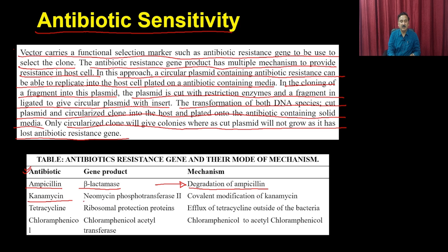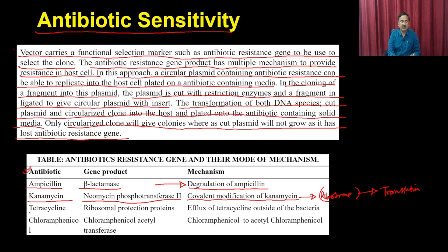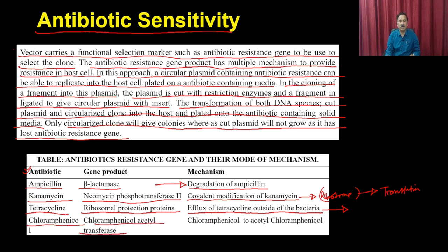There are different types of antibiotics and resistance genes. For ampicillin, the gene product is beta-lactamase, which degrades ampicillin to confer resistance. For kanamycin, the gene product is neomycin phosphotransferase 2, which does covalent modification of kanamycin so it cannot bind the ribosome, preventing interference with translation. For tetracycline, ribosomal protection proteins efflux tetracycline out of the bacterial cell. For chloramphenicol, chloramphenicol acetyltransferase modifies chloramphenicol to acetylchloramphenicol, preventing inhibition of translation.